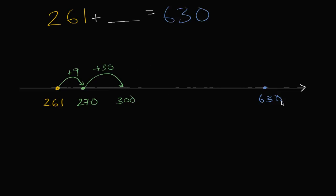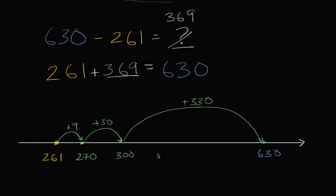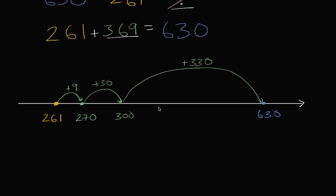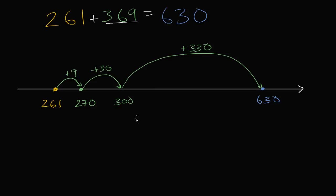And then from 300 to 630, well I could just add 330. So I could just add 330 there. So how much did I add in total? This is 9 plus 30 plus 330, that's 369. I added 369. So these are all ways of getting to the same value, all ways of viewing the same problem.